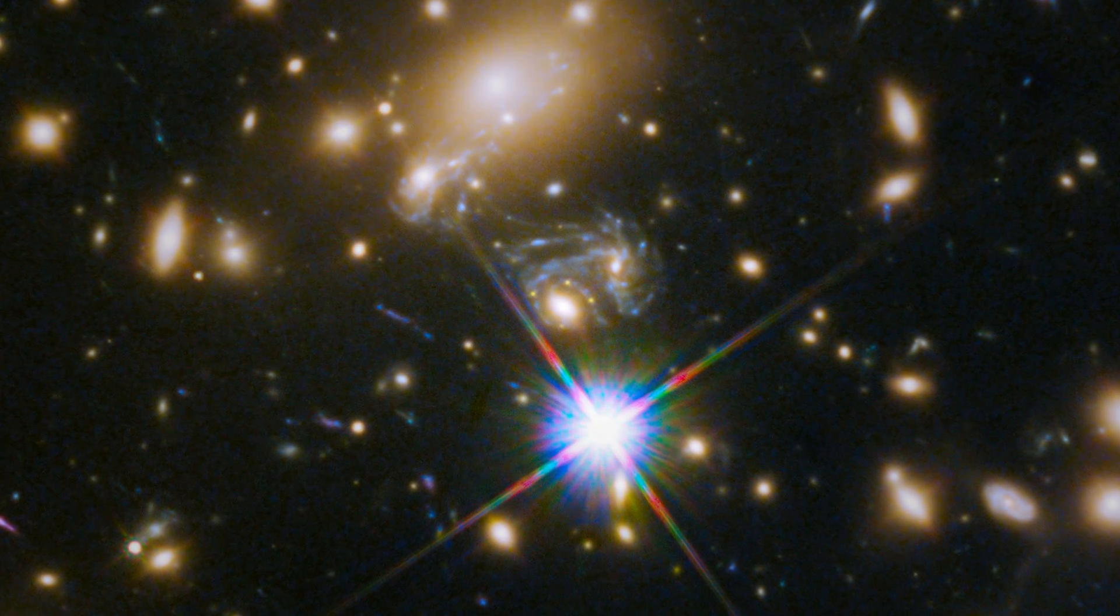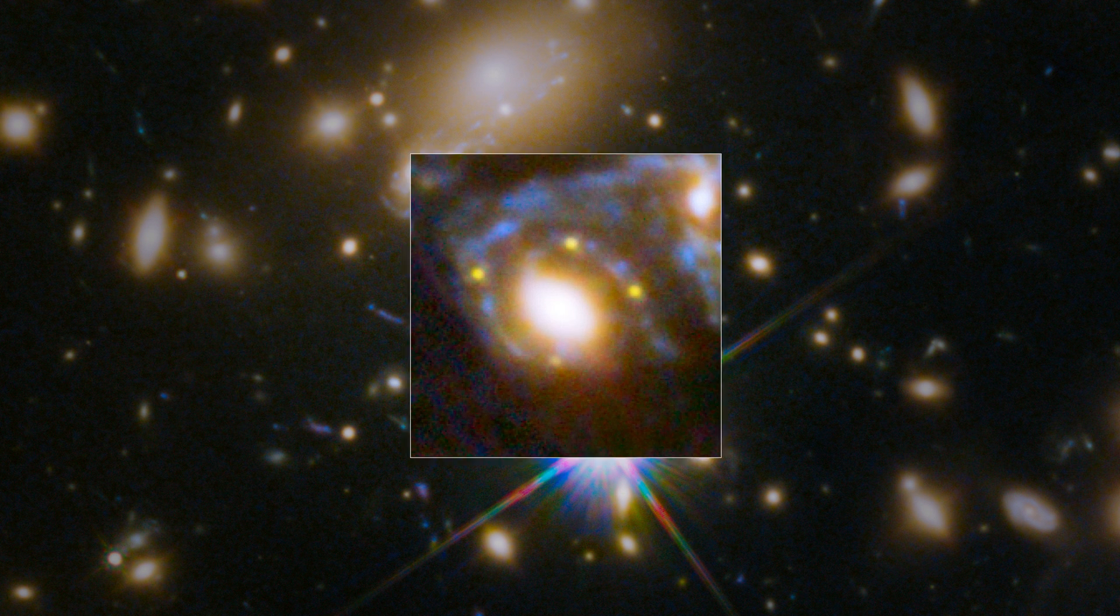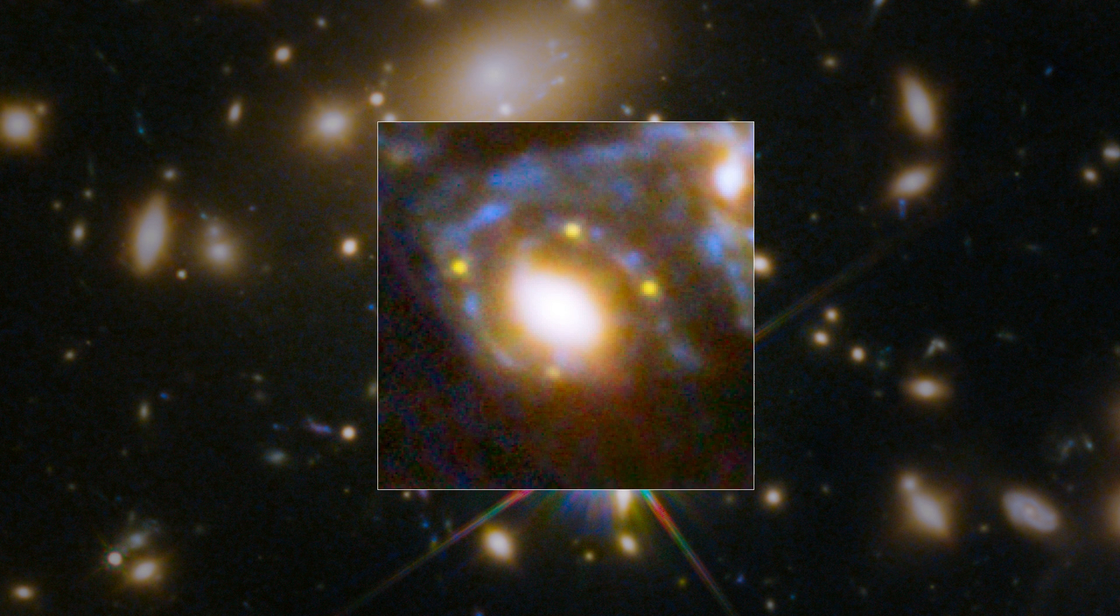The light from the dying star was magnified by the mass of the cluster, and as it is perfectly aligned with one of the galaxies in the cluster, its light has been split into four images.